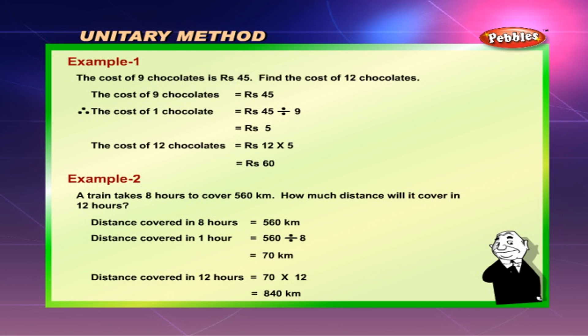Example 2: A train takes 8 hours to cover 560 km. How much distance will it cover in 12 hours? Distance covered in 8 hours is equal to 560 km. The distance covered in 1 hour is equal to 560 divided by 8 which is equal to 70 km. The distance covered in 12 hours is equal to 70 into 12 which is equal to 840 km.